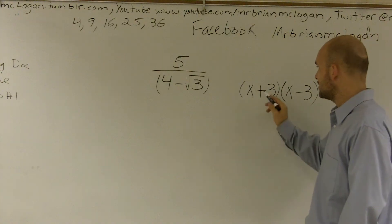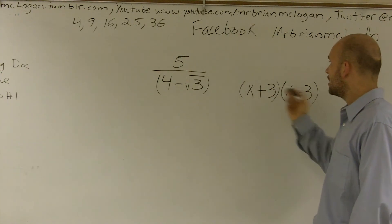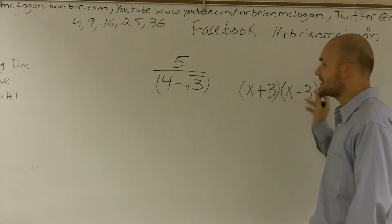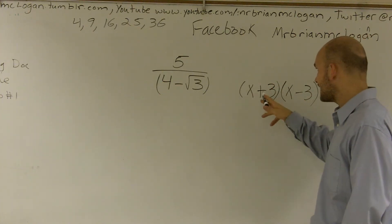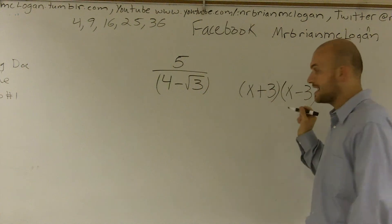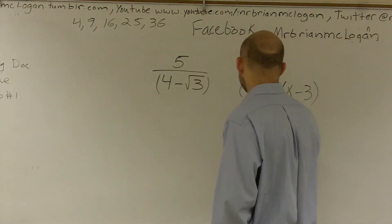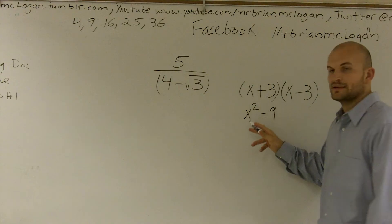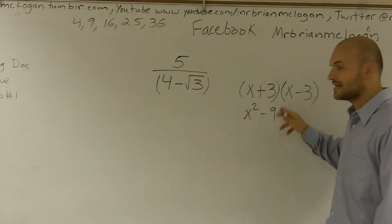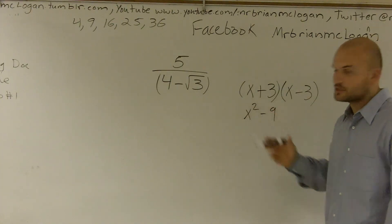This difference of two squares tells us that when I have the same front numbers and the same last numbers, with alternating signs, what I get when I factor this out is the front number squared minus the last number squared, which we call a difference of two squares.